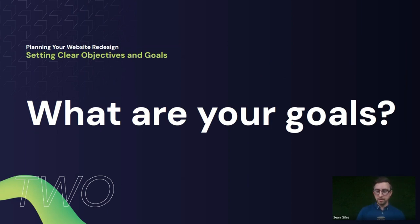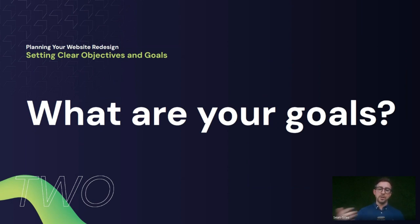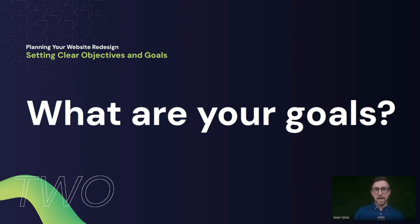First up: setting your clear objectives and goals. Write down a list of what they might be. You can look at things like industry averages or the number of visitors and conversions you're getting and aim to increase that by five, ten, or fifteen percent. By doing the redesign, you might want to improve your conversion rate by ten or fifteen percent — set that as a clear goal or objective.